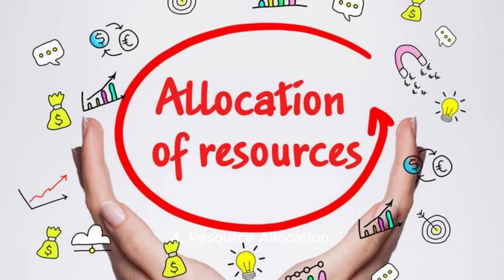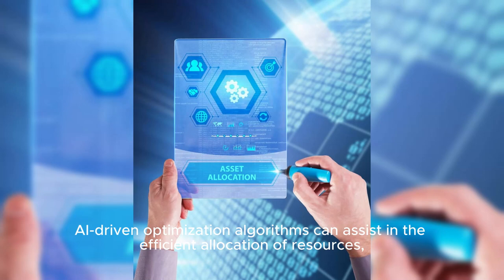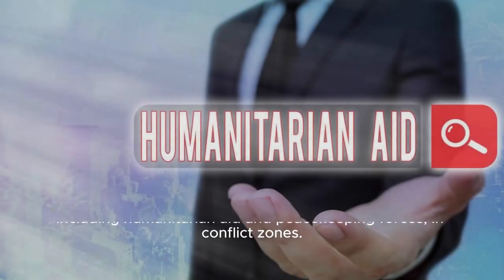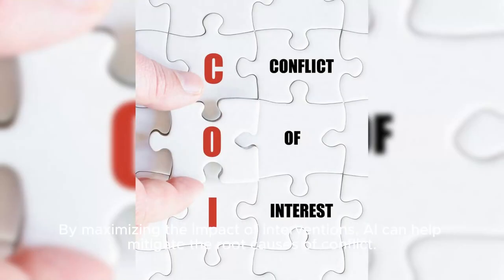Resource Allocation: AI-driven optimization algorithms can assist in the efficient allocation of resources, including humanitarian aid and peacekeeping forces, in conflict zones. By maximizing the impact of interventions, AI can help mitigate the root causes of conflict.